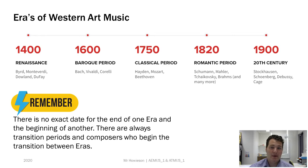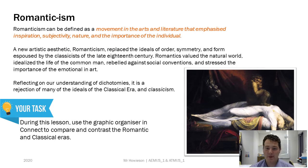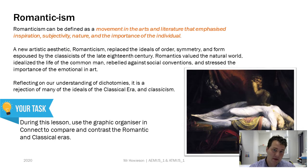The Romantic period was an explosion of music and composers. Romanticism can be defined as a movement in the arts and literature that emphasised inspiration, subjectivity, nature, and the importance of the individual. If we think about it in terms of dichotomies — battles between two forces, between form and feeling — then Romanticism is on the feeling side. It rejects many ideals of Classical music such as order, symmetry, and form, and values the natural world. It idealised the life of the common man, rebelled against social conventions, and stressed the importance of the emotional in art. You'll need to keep a graphic organiser to compare and contrast the Romantic and Classical periods, as it was a fundamental shift in thinking.